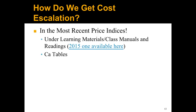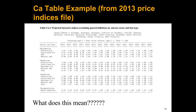Now let's go more in depth with cost escalation and come back to incorporate inflation as well. We get our cost escalation numbers from the most recent price indices and the CA tables. You can click the link to get the 2015 price indices. Here are the projected fuel price indices for 2013. A big note: these indices exclude inflation, so if you need to include inflation, you need to calculate that separately.